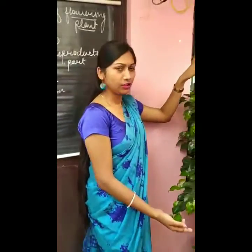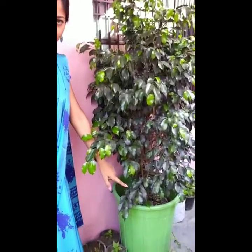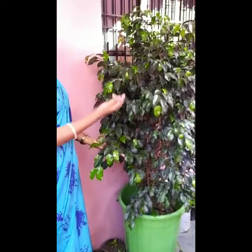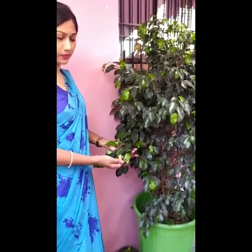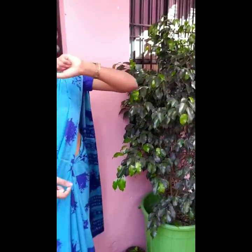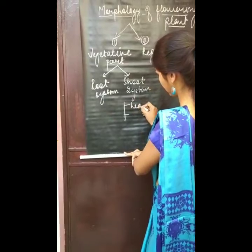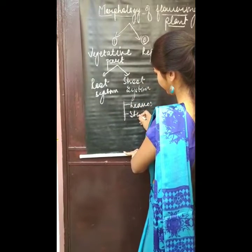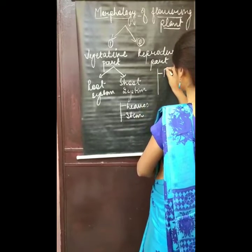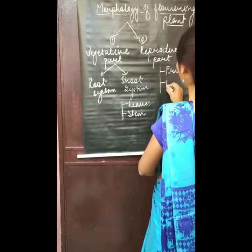Here you can see the whole plant. The underground part is called the root system and above the ground surface is the shoot system. This shoot system — you can see lots of leaves and a stem. So, the shoot system has leaves, stem, and the reproductive part comprises fruits and the flower.